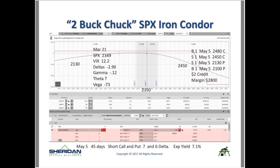Now let me show what I call the 'Two Buck Chuck' — an iron condor alternative to a short strangle. Using SPX at 2350 in the May 5 expiration, 45 days out. I'm selling the short put at about a 7-delta — meaning there's only a 7% probability of finishing below the short put — which is a 93% probability trade on that side.